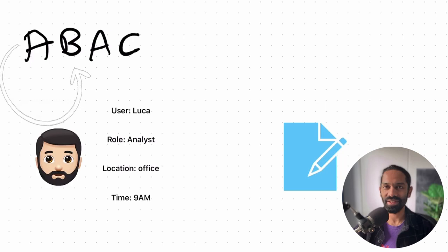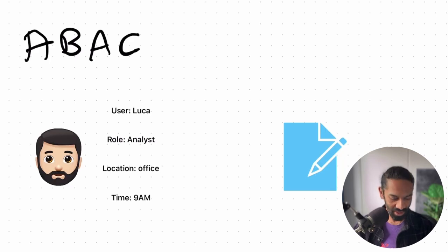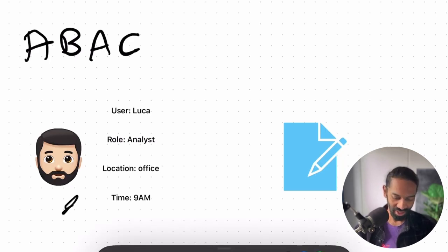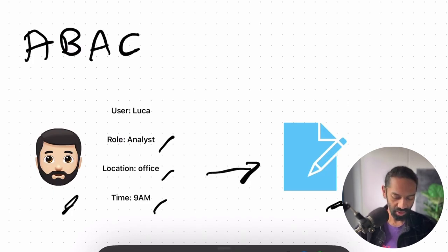Next, we've got attribute-based access control or ABAC, where access rights are granted to users through the use of policies that combine attributes together. So instead of relying just on roles, ABAC considers attributes — things like who you are, where you're accessing from, the time of day, and even what you're trying to access. For example, imagine Luca is an analyst trying to access sensitive financial data. The system checks: is he an analyst? Is he accessing this from the office? Is it a time of day that he's allowed to access this file? These different attributes are used to make a decision. If these conditions are not met, he does not get access; if they are, then he does.